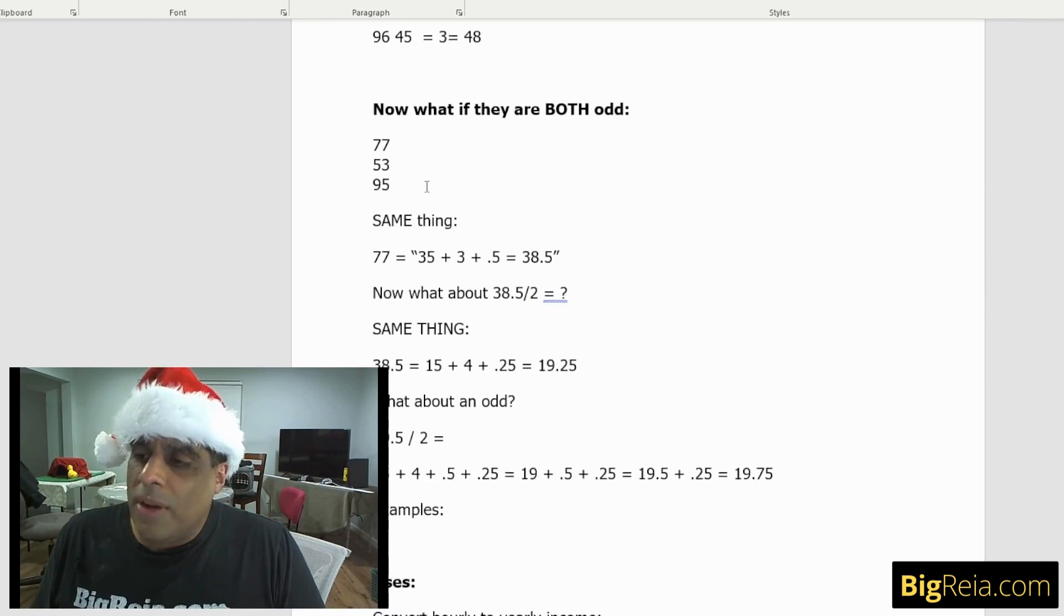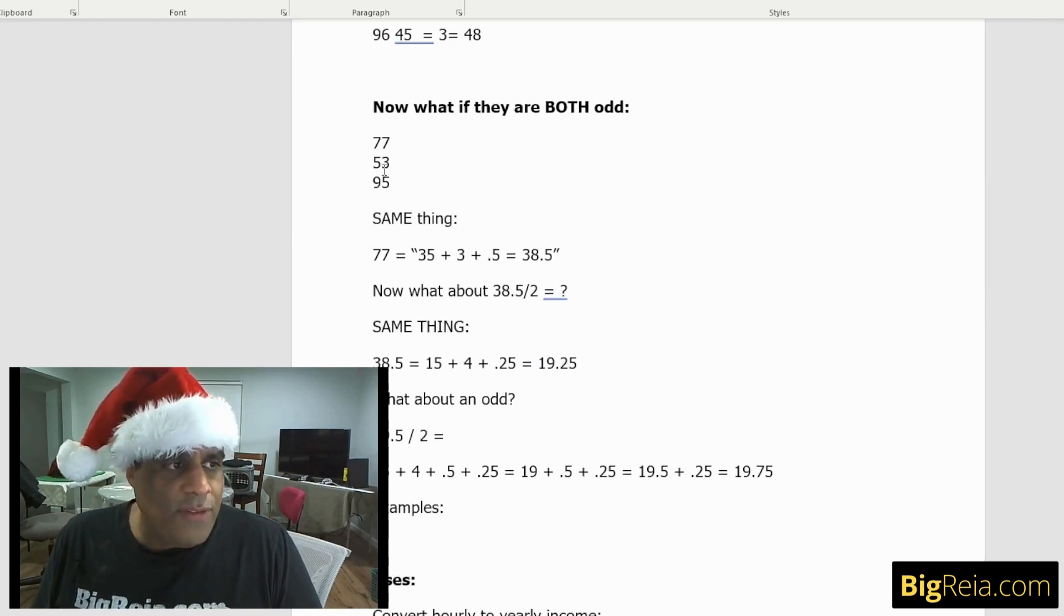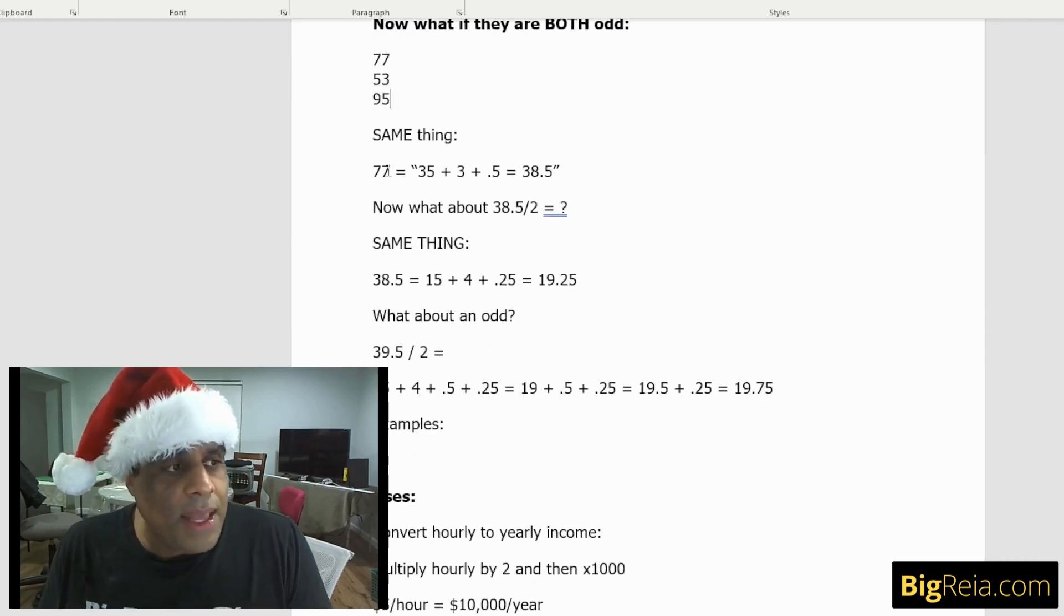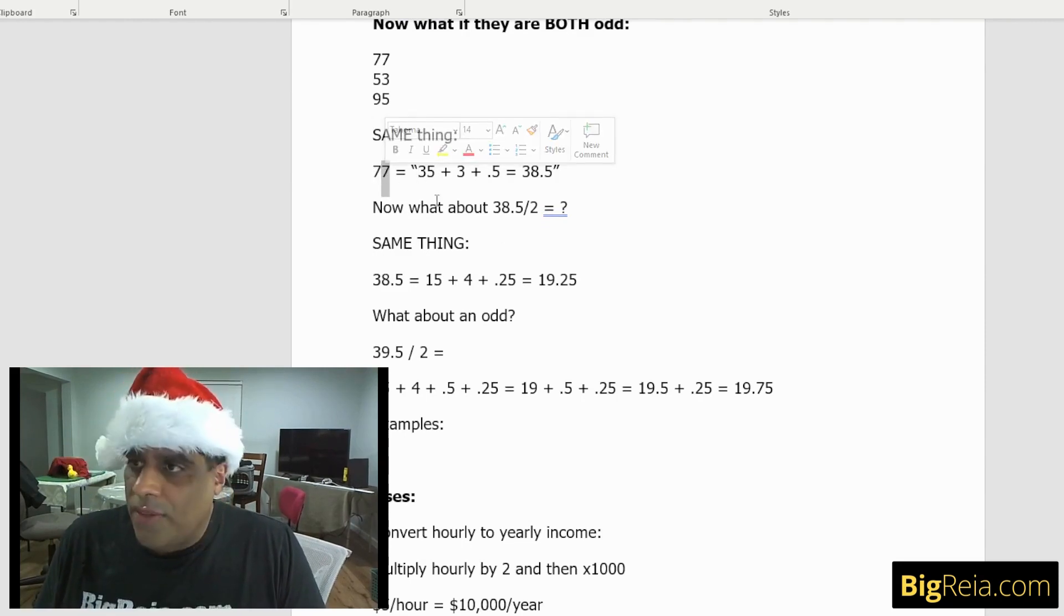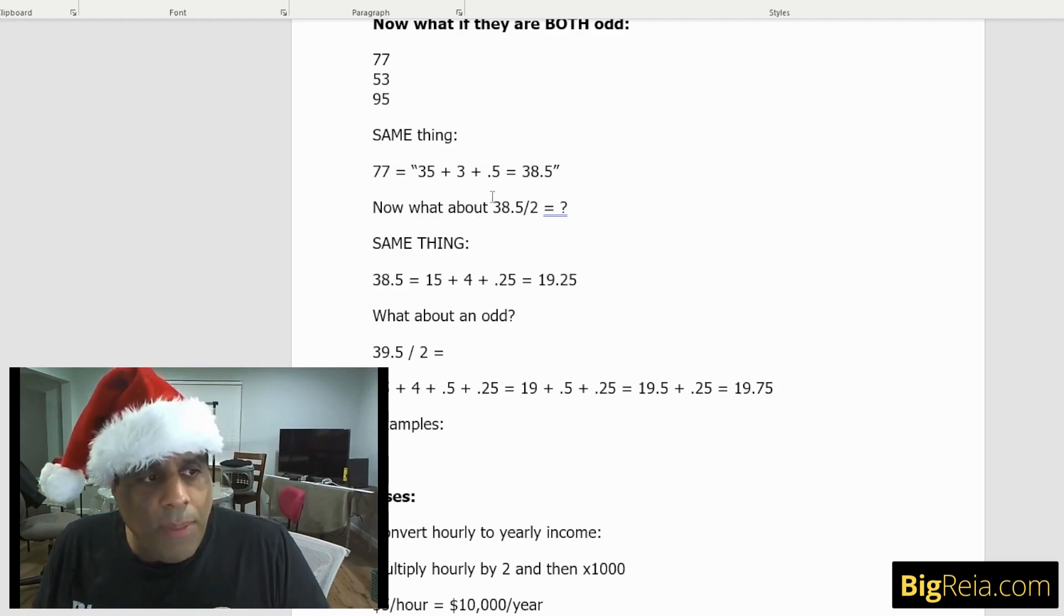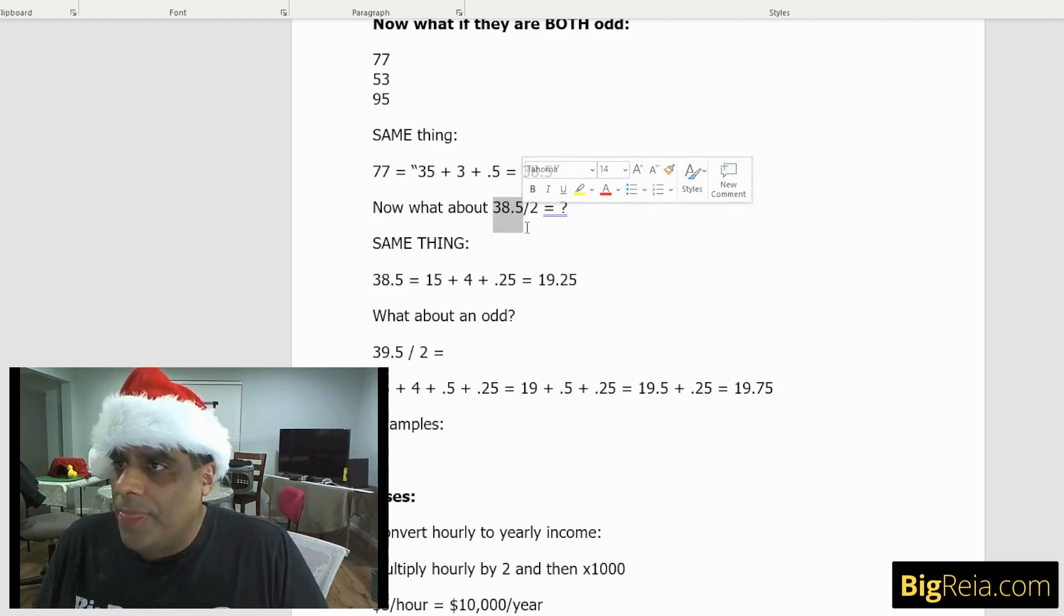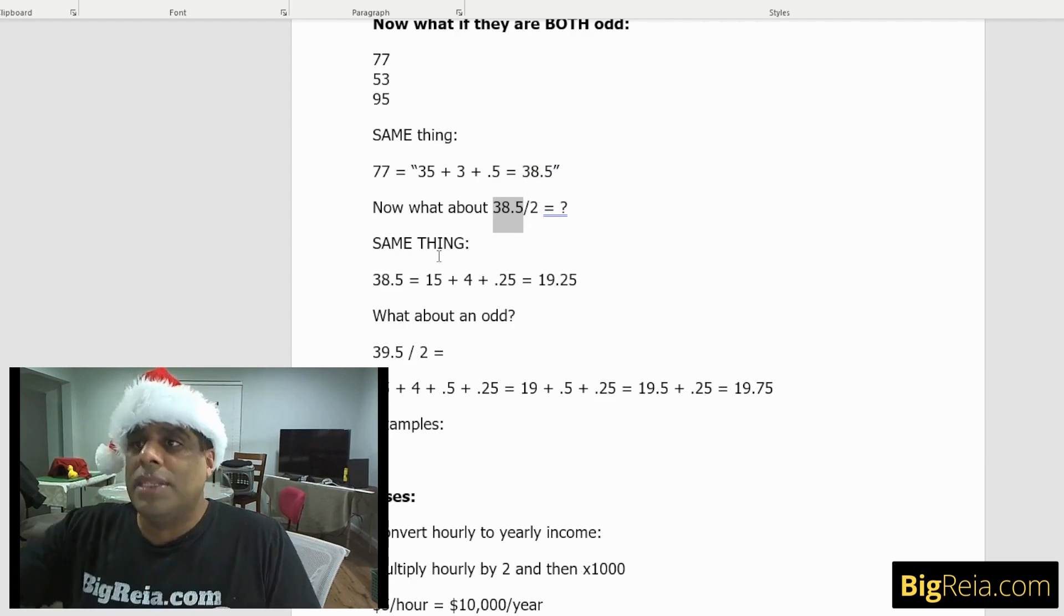But what if they're both odd? That gets a little bit trickier. What if it's 77, 53, 95? Again, we're going to do the same thing. 77 is 35 plus what is seven? It's going to be 3.5. So it's 35 plus three plus 0.5 or 38. Now what about 38.5 divided by two? That gets a little weird.